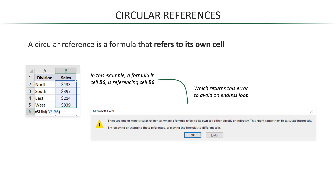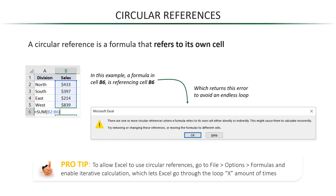However, you can allow Excel to use circular references by going to File, Options, Formulas, and enabling Iterative Calculation, which essentially lets Excel go through the calculation loop a set number of times that you determine.